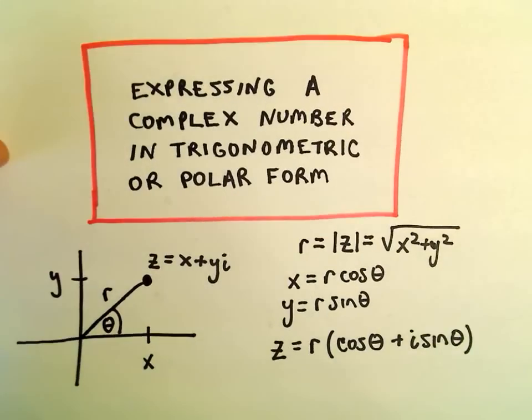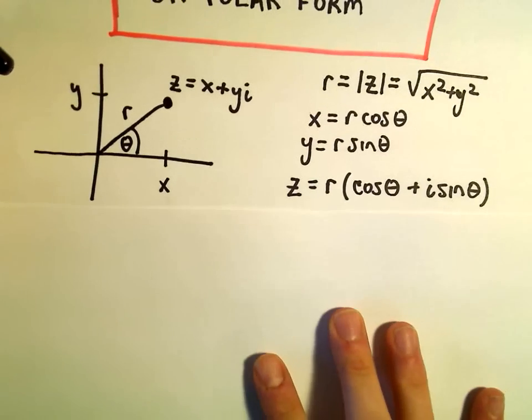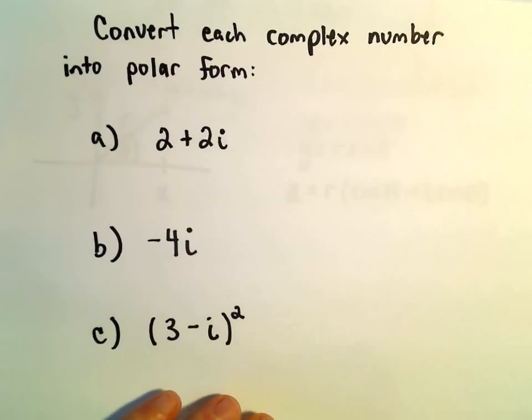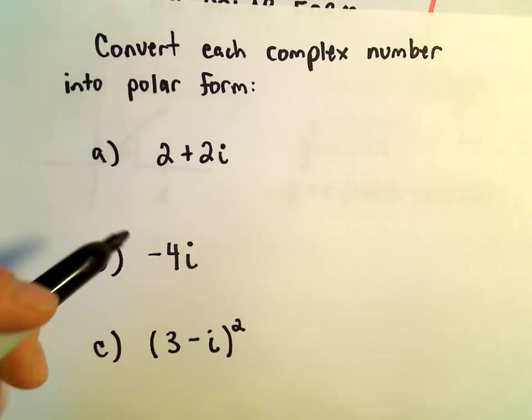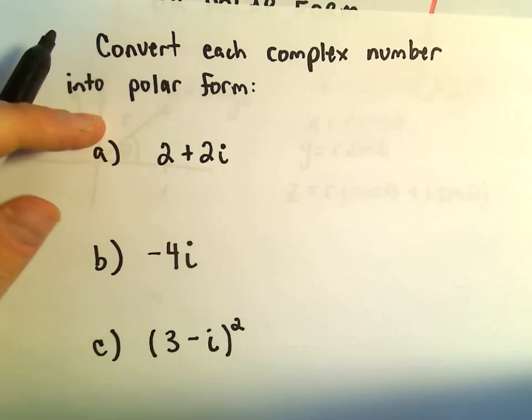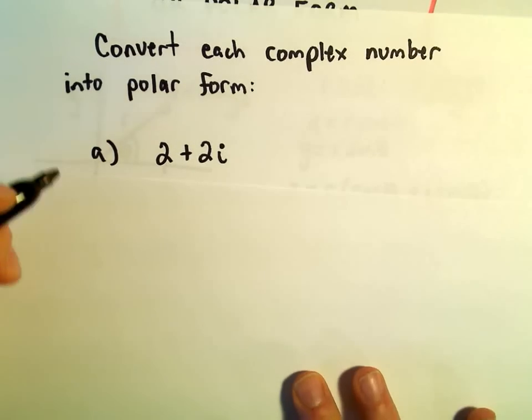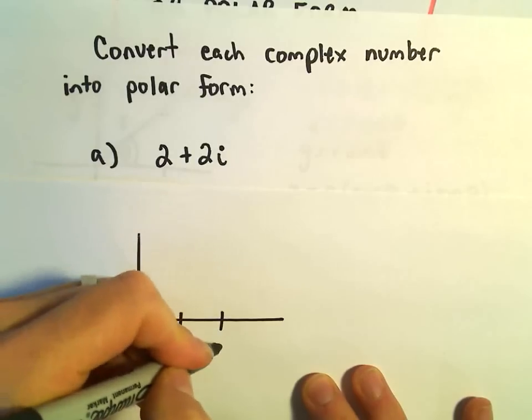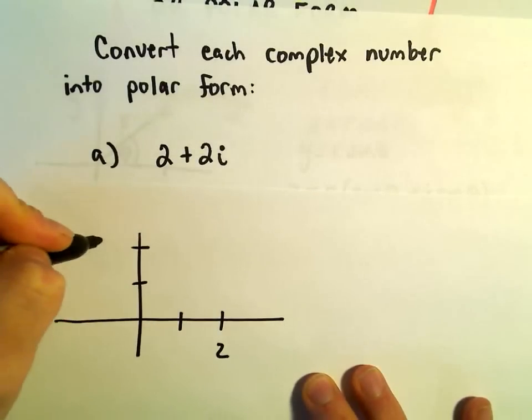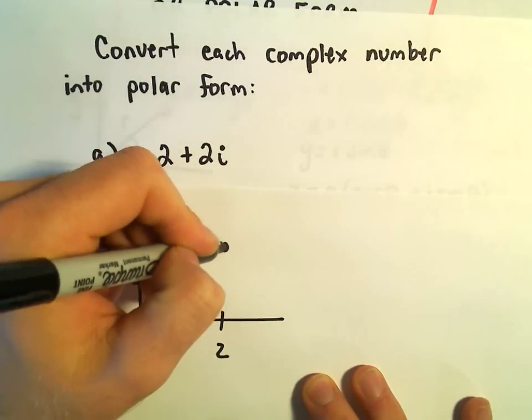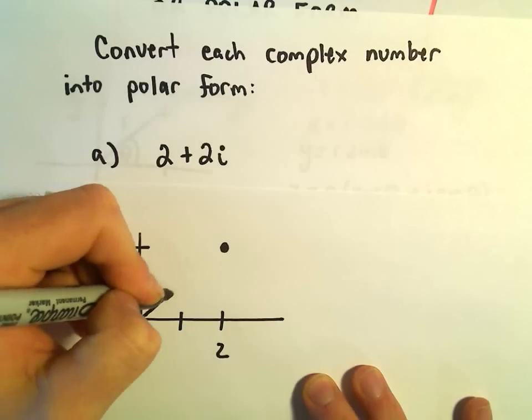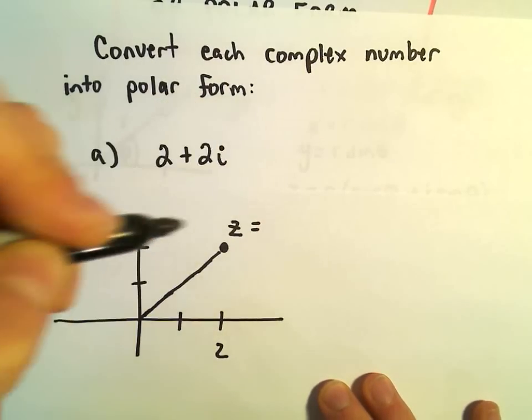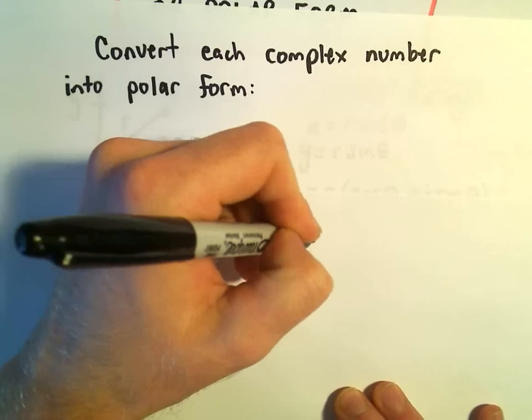So let's try to make some sense out of one of these. Suppose we're going to convert this complex number 2 plus 2i into polar form. So the first thing I'm going to do is just make a little sketch here. So over 2, up 2. Okay, so there's our complex number z equals 2 plus 2i.